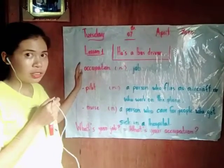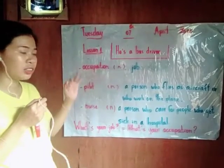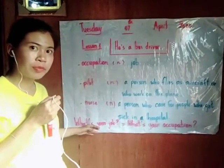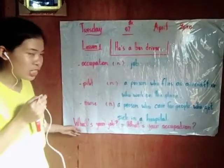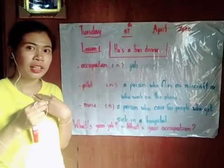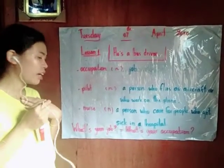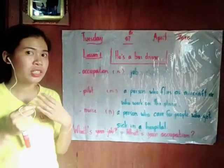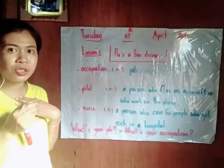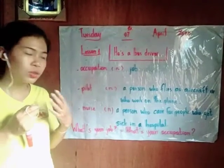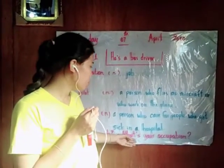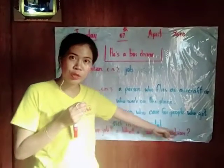Today we study three words — occupation, pilot, and nurse. If you want to ask someone's job, what question should you ask? Listen to me: what's your job? Everyone ask me — one, two, three. I'm a teacher. Now I ask you: what's your job? Are you a teacher? Are you a student? Yes, you are a student. So if I ask you 'what is your job?', your answer is: I'm a student. One more — it means the same: what's your occupation? What's your occupation?